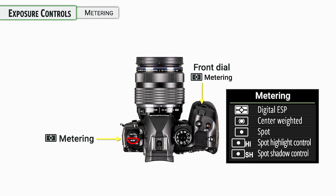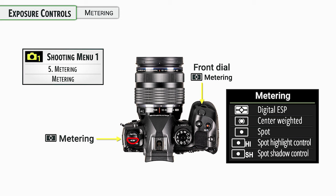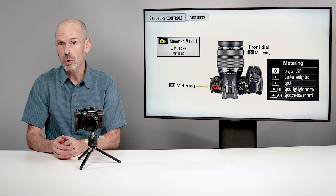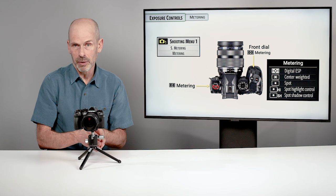You can also find the metering setting in the menu. As a common theme with this camera, there's a button on the outside, a way to access it in the super control panel, and a separate dedicated menu option — we'll talk more about that as we get into the menus.